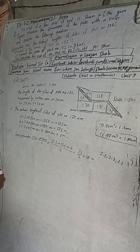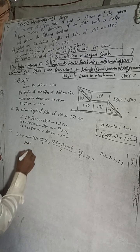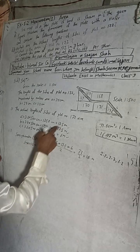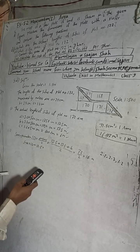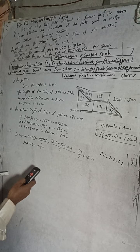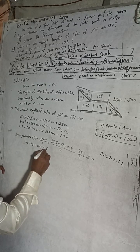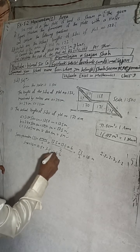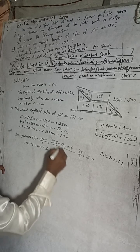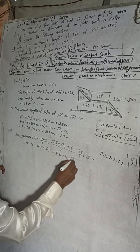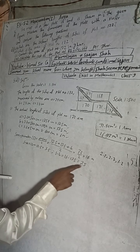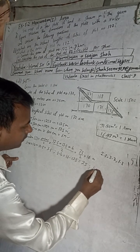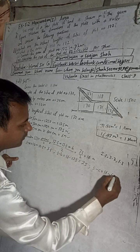Now we find S minus A, S minus B, and S minus C. S minus A is 16 minus 12.5, which equals 3.5. S minus B is 16 minus 13.5, which equals 2.5. And S minus C is 16 minus 6, which equals 10.